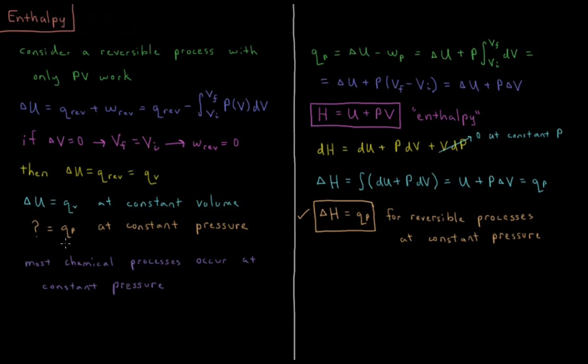It's much more useful to us to have a metric for what the heat is during a constant pressure process than what it is for a constant volume process. We want some thermodynamic state function which tells us what the heat absorbed into or released from the system is during some reversible constant pressure process. The heat during some constant pressure process is equal to the change in the internal energy minus the work that occurs during that constant pressure process.